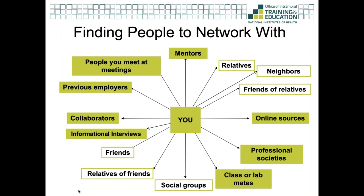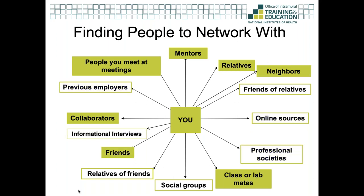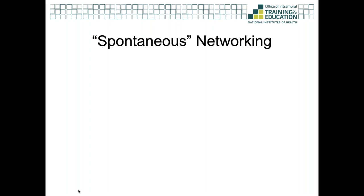Everyone has a network. When we talk about networking, it's really about expanding that network and being aware of it. You can also divide these groups differently: spontaneous contacts — people you'll know anyway without trying, like friends, relatives, neighbors, mentors, classmates — versus people you might have to seek out, like previous employers, informational interview subjects, online sources, and professional societies. But so-called 'spontaneous' networking isn't truly spontaneous if done well.